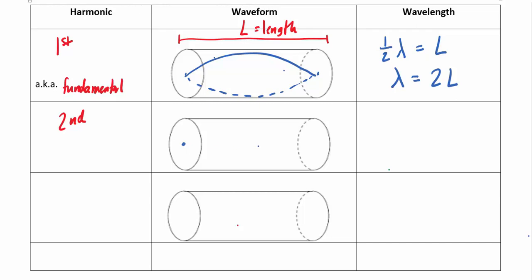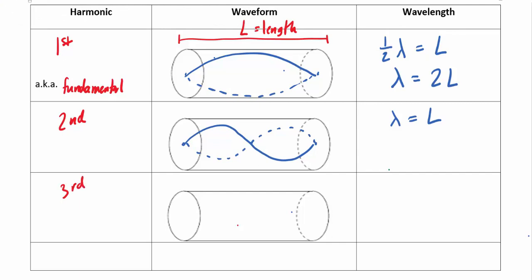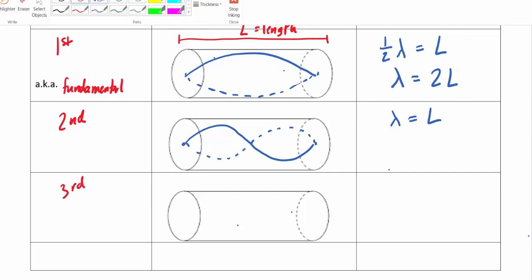For the second harmonic, we have a node at each end with an additional node added right in the middle, giving us this pattern. In this case, the length L fits exactly one full wavelength.